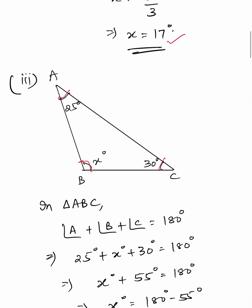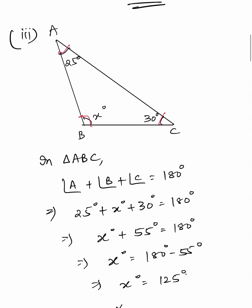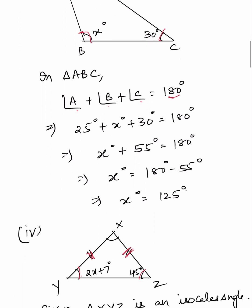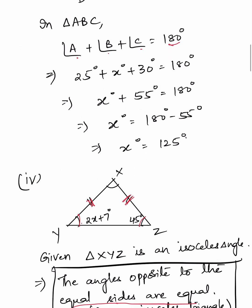Third part: In triangle ABC, angle A plus angle B plus angle C always equals 180. Therefore 25 plus X plus 30 equals 180. So X plus 55 equals 180, and X equals 180 minus 55, which gives X equal to 125 degrees.